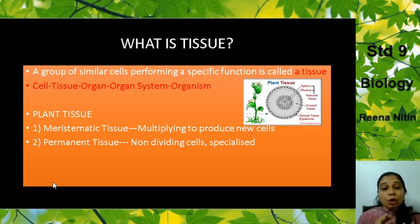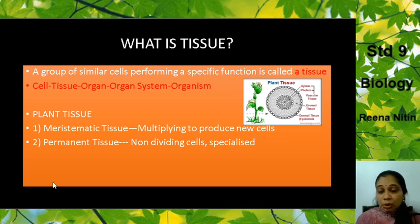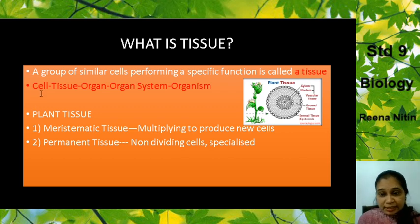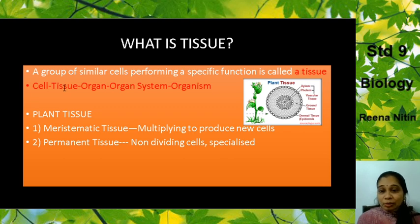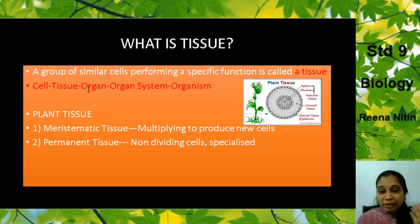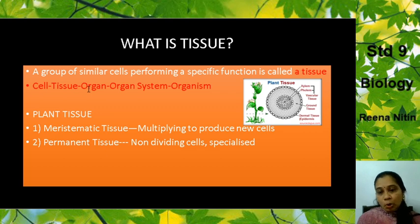Now I shall tell you the information that you had studied in your lower classes. Our body is made up of cells. The cells which are similar, they come together and they form a tissue. Tissues which are similar, doing the same function, they come together and they form an organ — for example, the liver, the pancreas. These are the organs of your body.